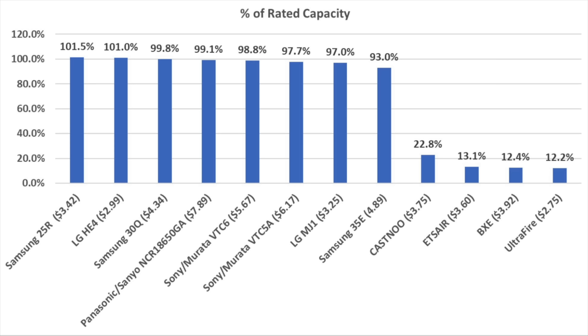When it comes to being honest about its capacity, it's liar, liar, pants on fire for the UltraFire. The UltraFire only delivered 12.2 percent of its rated capacity, the worst in the showdown.